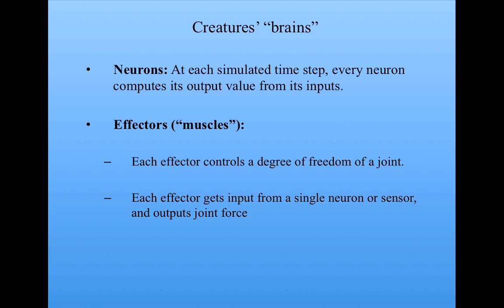For the creature's brains, each neuron computes its output value from its inputs. The genetic algorithm evolves the neural network and the output function of each neuron. The system had effectors, which you can think of as muscles, where each effector controlled a degree of freedom of a joint. Each effector gets its input from a single neuron or a sensor, and outputs the force to put on the joint.